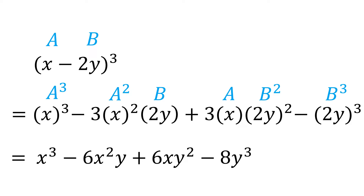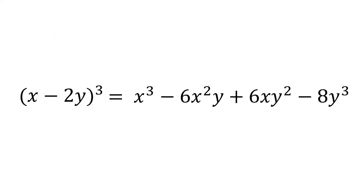So therefore, (x minus 2y) cubed is equal to x cubed minus 6x squared y plus 12xy squared minus 8y cubed.